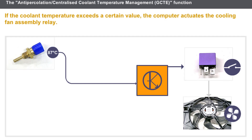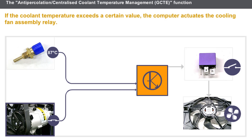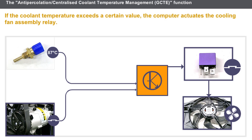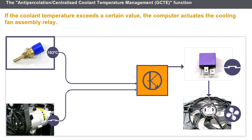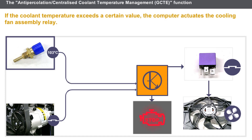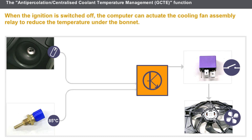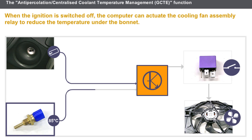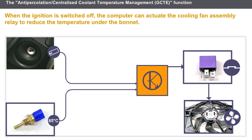The injection computer also actuates the cooling fan assembly relay when the air conditioning compressor is switched on. In the event of excessive temperature, the injection computer switches on the coolant temperature warning light on the instrument panel. Some diesel engines are equipped with an anti-percolation function. When the ignition is switched off, the injection computer analyzes the coolant temperature. If the coolant temperature exceeds a certain value, the computer assumes there is a risk of percolation and actuates the cooling fan assembly relay to reduce the temperature under the bonnet.